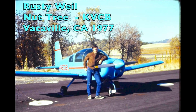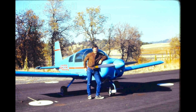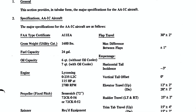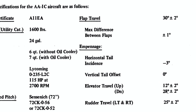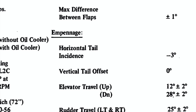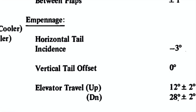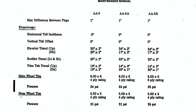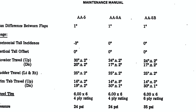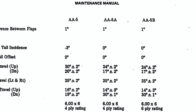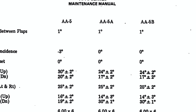Good morning ladies and gentlemen, welcome to Grumman Pilots YouTube channel. Today we're going to talk about Maynard's last janky, here it is at Nut Tree Airport about 1977, Rusty Wheel standing beside it with the original minus three degrees on the horizontal tail. We're going to talk about angle of incidence and what it relates to in flight loads. On the Traveler it was also minus three degrees, and on the Cheetah and the Tiger it was zero degrees.